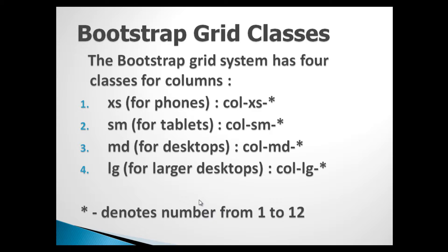In order to create and use Bootstrap grid, Bootstrap provides a few grid classes. Different classes are meant to be built for different devices. There is a class xs, meaning extra small. It is used for extra small devices such as phones. The class is denoted by col-xs- and a number from 1 to 12. For example, if we write col-xs-3, it signifies to Bootstrap to create an extra small column that spans 3 of 12 columns.